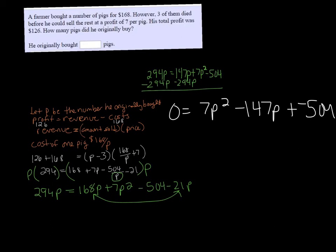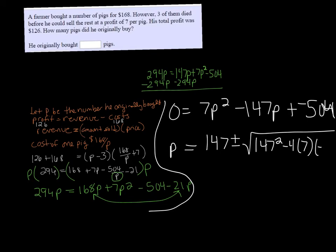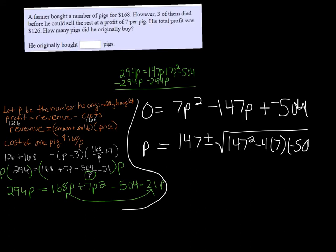You can try factoring it, but probably the easiest thing to do with numbers this big is just use the quadratic formula. So P is going to equal negative B, which is positive $147, plus or minus B squared, which would be $147 squared, minus 4 times A, which is 7, times C, which is negative $504, and that's all over 2 times A, which is 7.